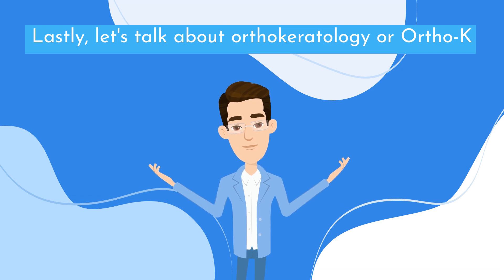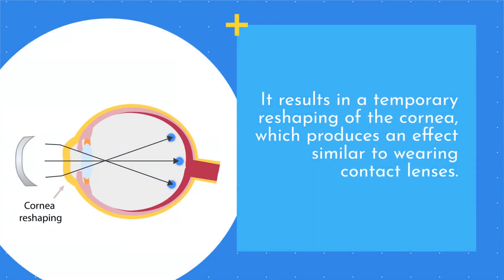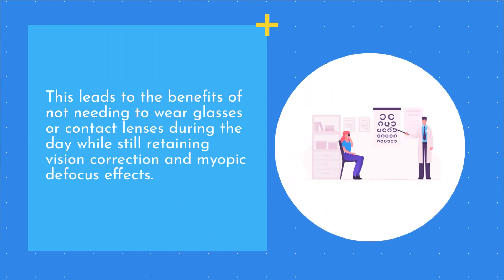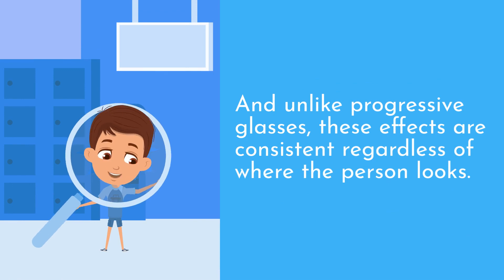Lastly, let's talk about orthokeratology, or Ortho-K. Ortho-K is a non-surgical myopia-controlled treatment that involves wearing specially designed hard contact lenses overnight. It results in a temporary reshaping of the cornea, which produces an effect similar to wearing contact lenses. This leads to the benefits of not needing to wear glasses or contact lenses during the day while still retaining vision correction and myopic defocus effects. And unlike progressive glasses, these effects are consistent regardless of where the person looks.